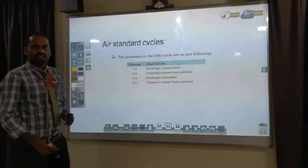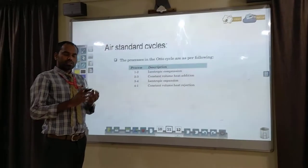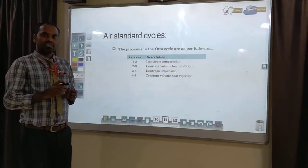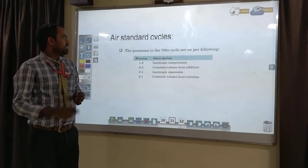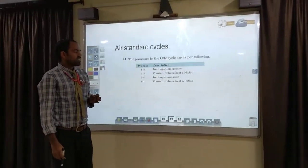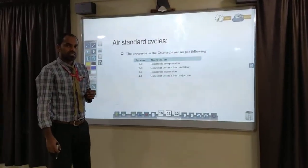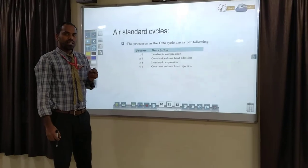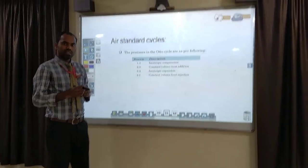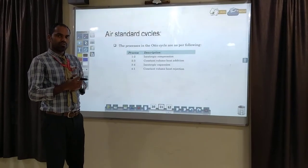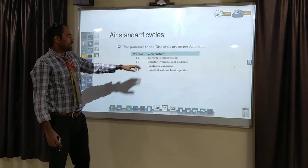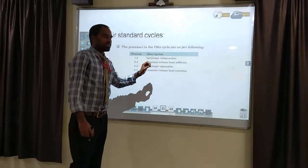Air standard cycles: air standard cycles include the Carnot cycle, Otto cycle, dual cycle, Atkinson cycle, and Stirling cycle. In this, the first cycle is the Otto cycle. The Otto cycle runs four processes: first, isentropic compression; second, constant volume heat addition; third, isentropic expansion; and fourth, constant volume heat rejection.